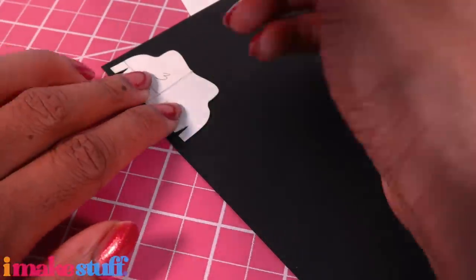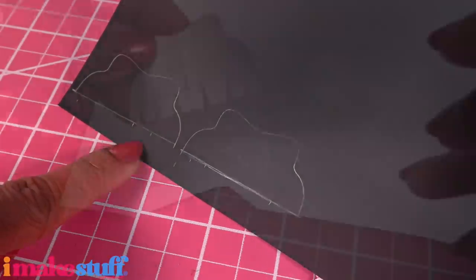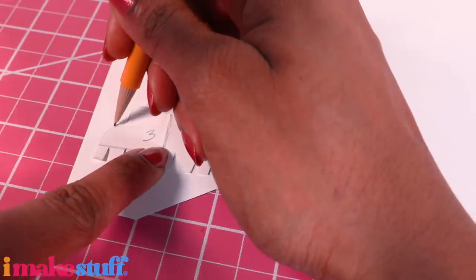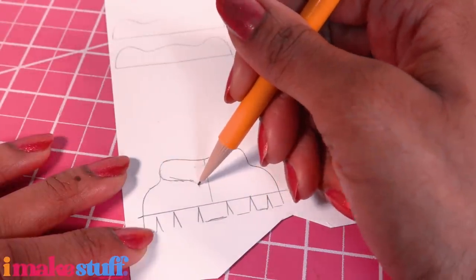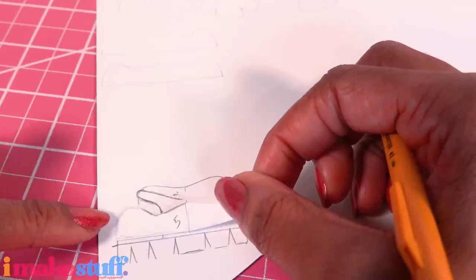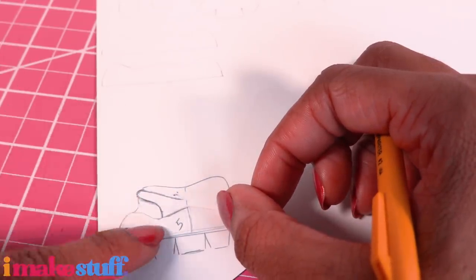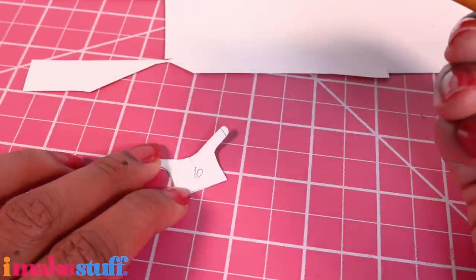We need to make another pattern out of pattern number three, so let's trace it, sketch like a Y shape. Place pattern number five on top just to make sure it kind of goes down near the dip. Cut it out, label it six, and trace it on red.